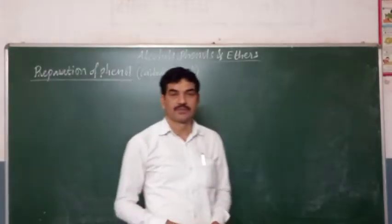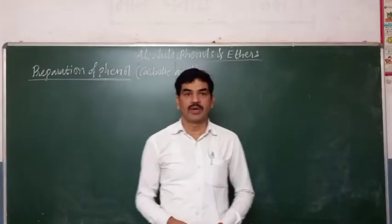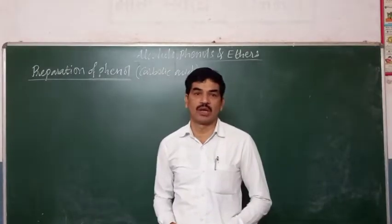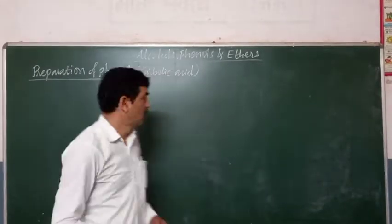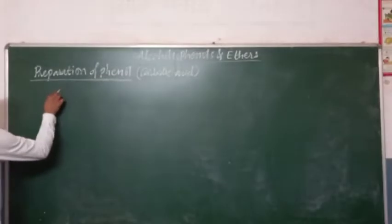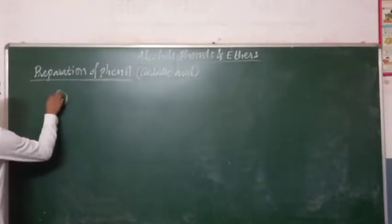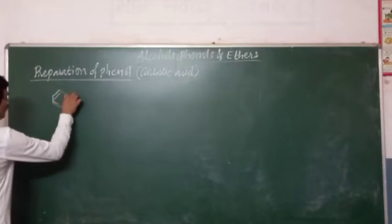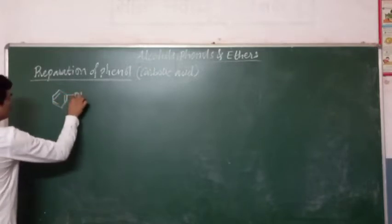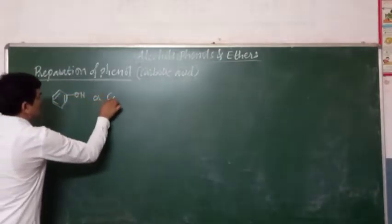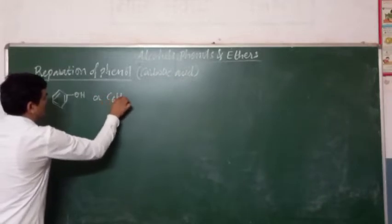Good morning students, today we are going to study the methods of preparation of phenol. Phenol, which is also known as carbolic acid, has a formula C6H5OH.